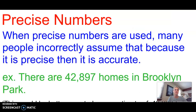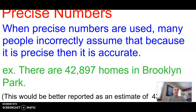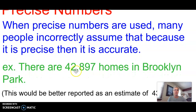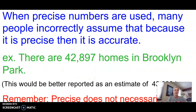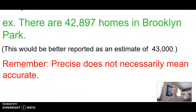Precise numbers: be wary if you see a reporting with very precise numbers like 42,897 homes in Brooklyn Park. It would be better to represent that as an estimate of 43,000 — just round to the nearest thousands or millions. Precise numbers don't necessarily mean accurate, and a lot of people mistakenly think they do.